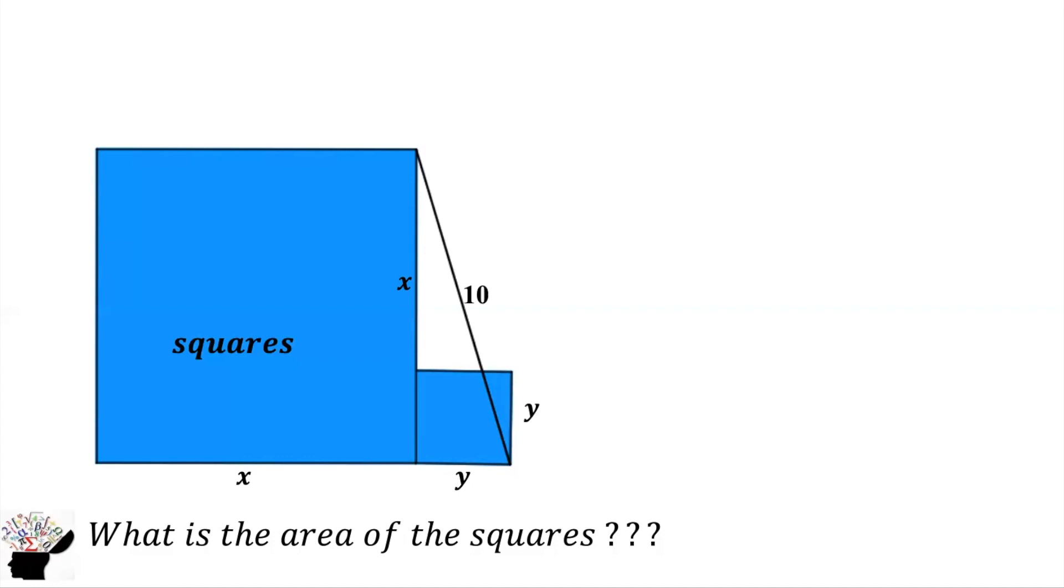Now we know that this angle is already 90 degrees, so we can use Pythagoras theorem. So using Pythagoras theorem, we are going to get x squared plus y squared, and this is the hypotenuse 10 squared. So from there we are going to get 100. So the areas of the two squares is 100, and that is the answer.